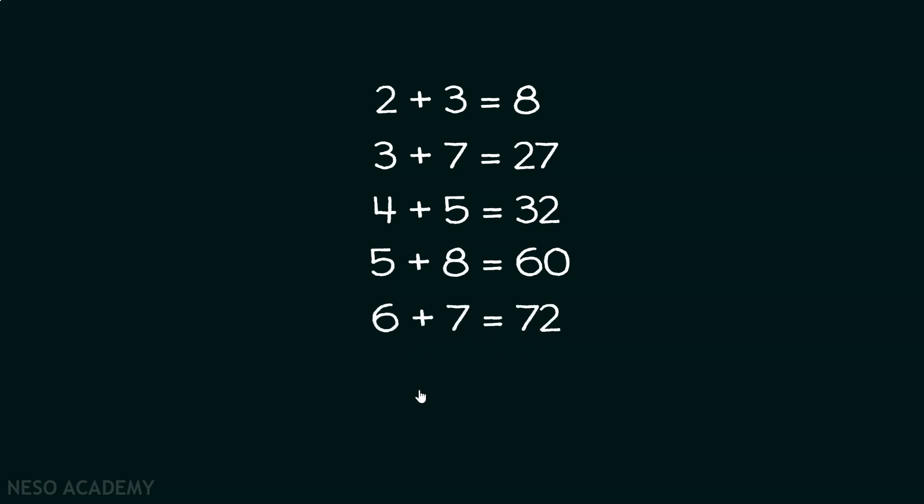Now, you need to find out what is 7 plus 8 equal to. It is obvious that 2 plus 3 is not equal to 8 in reality, right? 2 plus 3 is equal to 5.